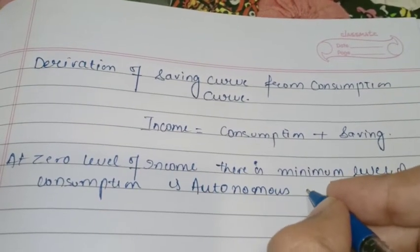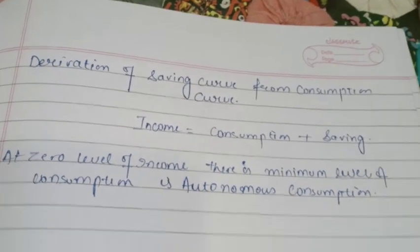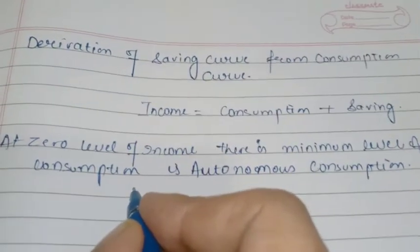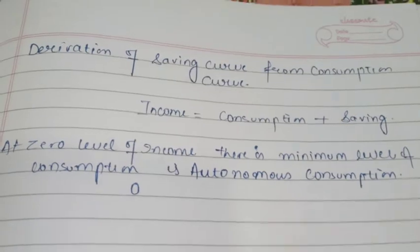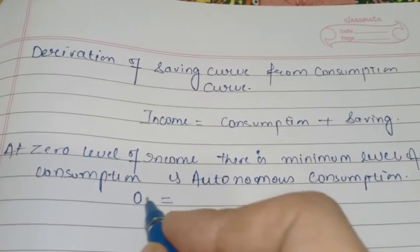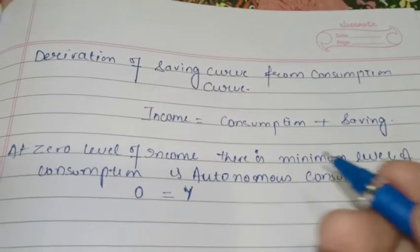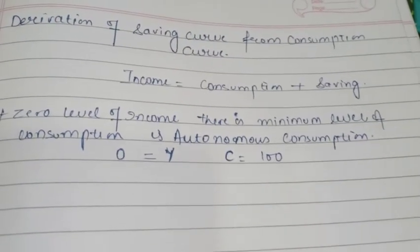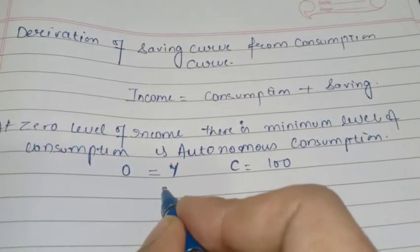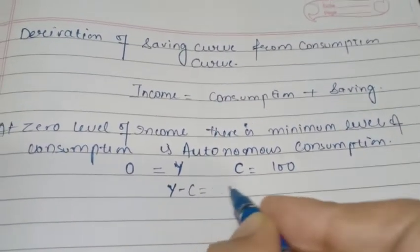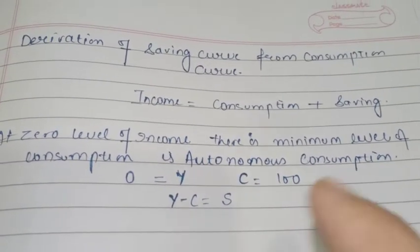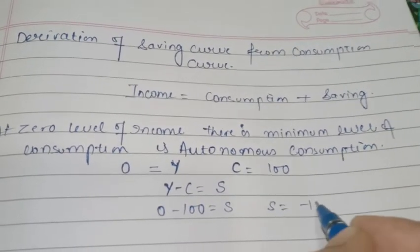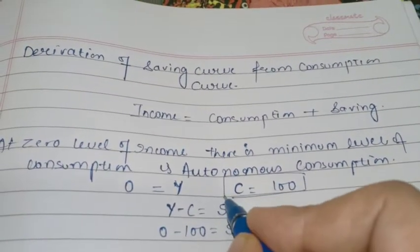This minimum level of consumption at zero level of income is known as autonomous consumption. For example: your income is zero, you are earning nothing, but you are still consuming. If your income is zero and your consumption is 100, then your savings will be minus 100 — because saving equals income minus consumption. So saving will be minus 100, which is equal to the autonomous consumption at zero level of income.